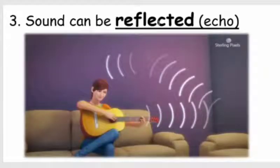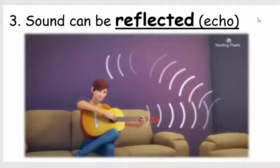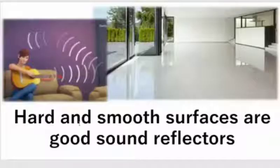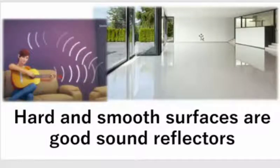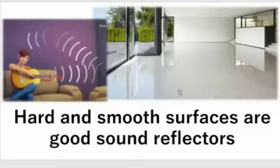The third characteristic: sound can be reflected — this is called an echo. Echo can be heard in a cave or in a house without much furniture. You can hear your voice repeated because the sound is reflected. Hard and smooth surfaces are good sound reflectors. For example, in a new house with hard floors and bare walls without any furniture, you can hear your voice repeated.